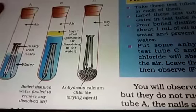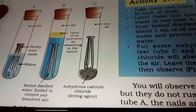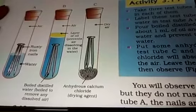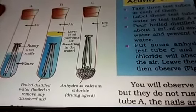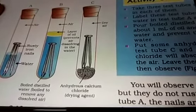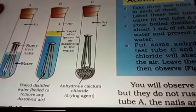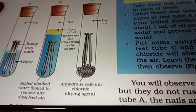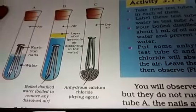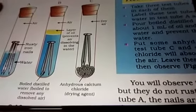So now we are learning about the prevention of corrosion — how we can prevent any substance from corroding. Rusting of iron can be prevented by painting, oiling, greasing, galvanizing, chrome plating, anodizing, and making alloys.